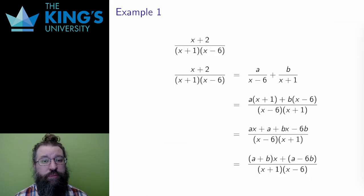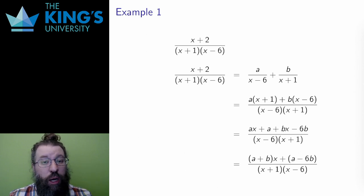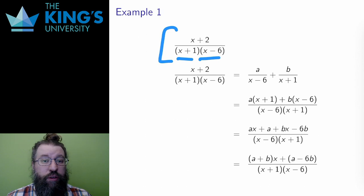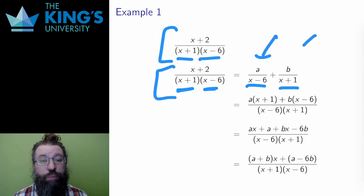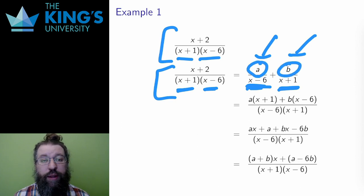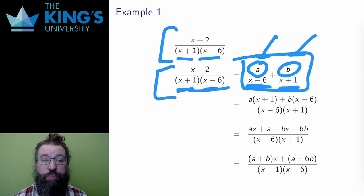The easiest way to demonstrate the technique is through example. To start, I need a proper rational function with a factored denominator, using two ideas from the previous video: proper fractions and factoring. Since the denominator is factored, I know what the denominators of the smaller pieces must be — I want x plus 1 and x minus 6. Since the original is a proper fraction, the individual pieces will also be proper fractions. The denominators are linear factors of degree 1, so the numerators must be degree 0, which is a constant. Therefore, the partial fractions will be some constant A over x minus 6 plus some constant B over x plus 1.